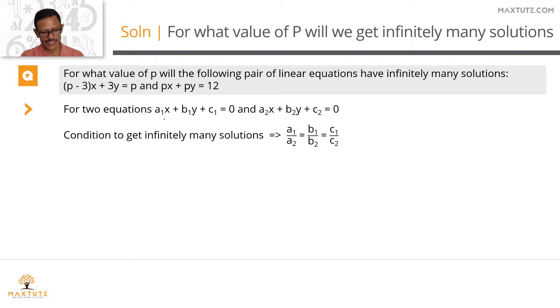For two equations of the form a1x plus b1y plus c1 equals 0 and a2x plus b2y plus c2 equals 0, these two equations will have infinitely many solutions when a1 by a2 equals b1 by b2 equals c1 by c2.